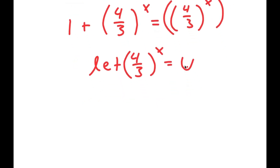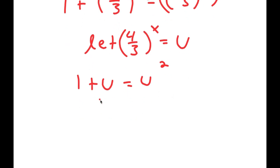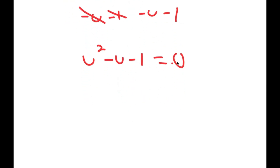If I substitute u in for 4 over 3 to the power of x, I get 1 plus u is equal to u squared. Now if I subtract u and 1 from both sides, these cancel out, and I get u squared minus u minus 1 is equal to 0.